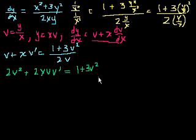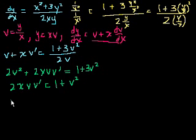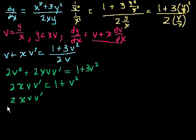Let's subtract 2v squared from both sides, and we'll be left with 2xv times v prime is equal to 1 plus v squared — since 3v squared minus 2v squared is just v squared. Now we want it to be separable, so let's put all the v's on the left-hand side: 2xvv prime divided by 1 plus v squared is equal to 1.